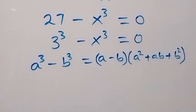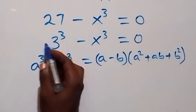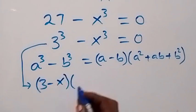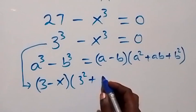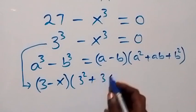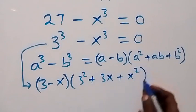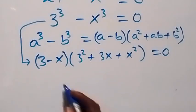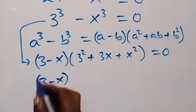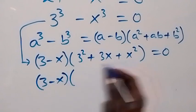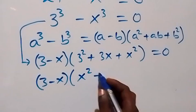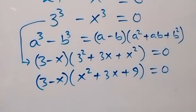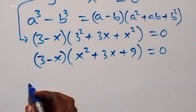Applying that identity here, what we have now is 3 minus x, then in bracket 3 squared plus 3 times x — that gives us 3x — then plus x squared. So 3 squared is 9. Now rearranging, this gives us x squared plus 3x plus 9 in the bracket, equals 0. So we have 3 minus x times bracket x squared plus 3x plus 9 equals zero.